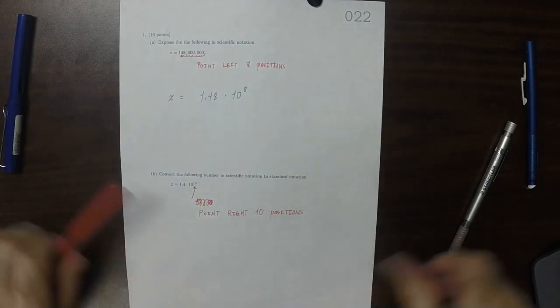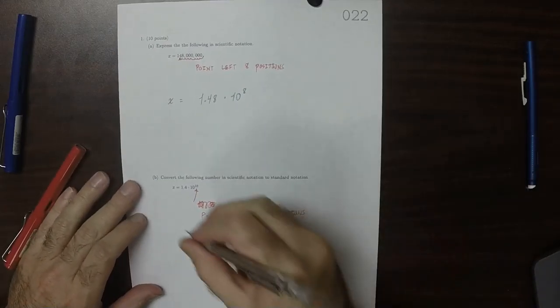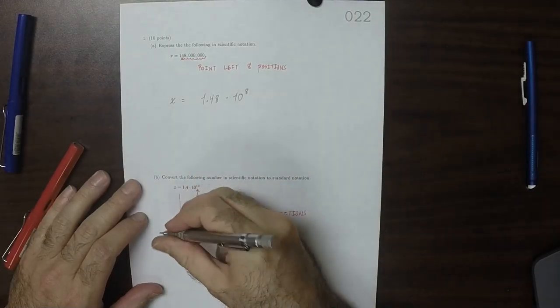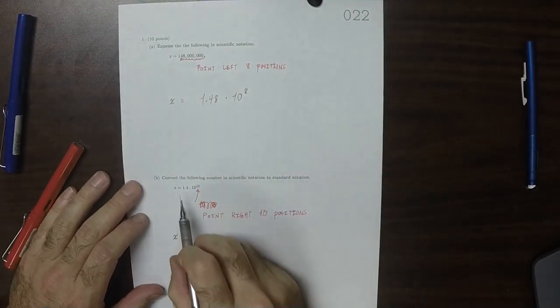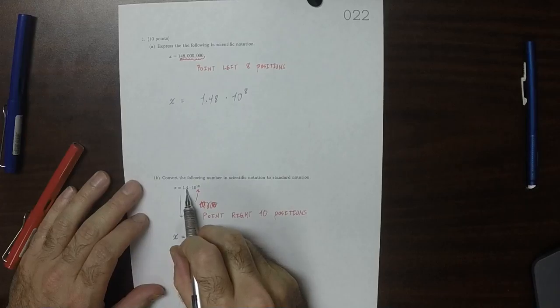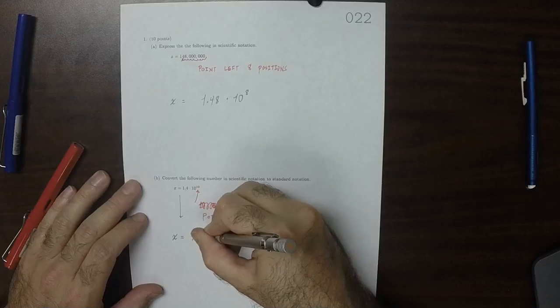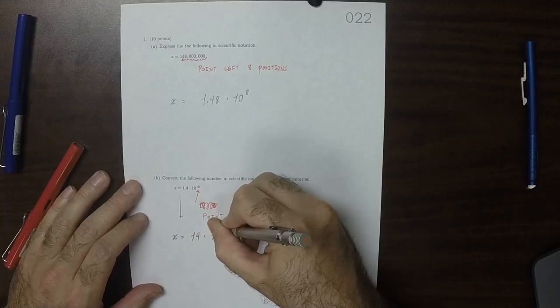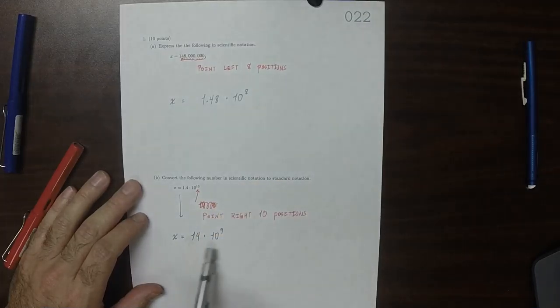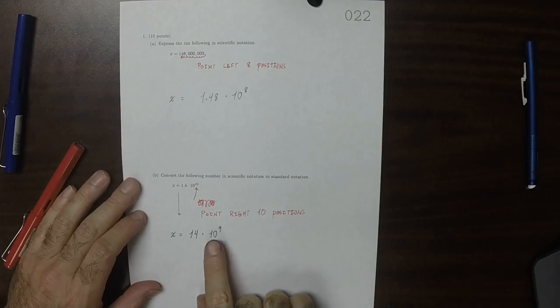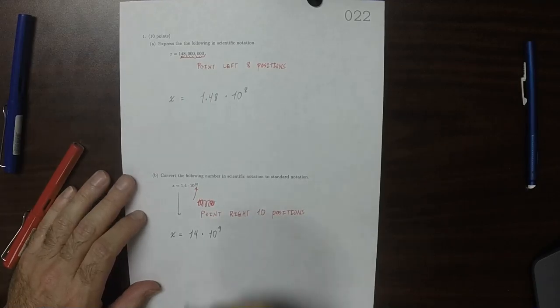We'll move it past the 4 so that it looks like 14 times 10 to exponent 9. So that's moving it to 1. Now to finish this up, we need 9 more zeros.